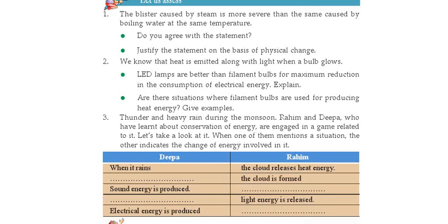So how will you write this? 'I agree with this statement because steam has maximum energy.' This is the way you want to write. Then the next part says: justify the statement on the basis of physical change. The answer already given covers that second part as well.